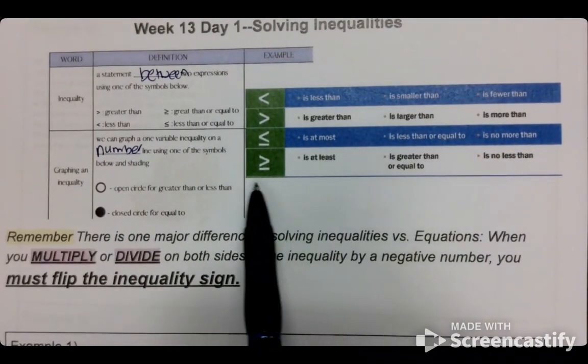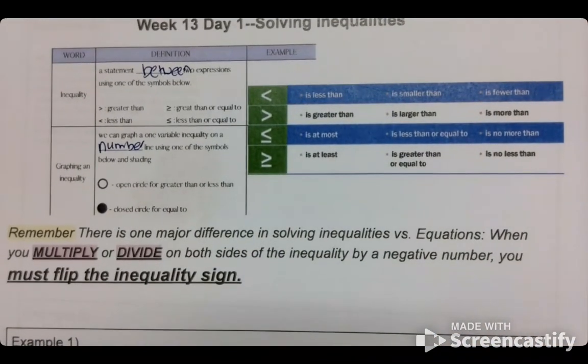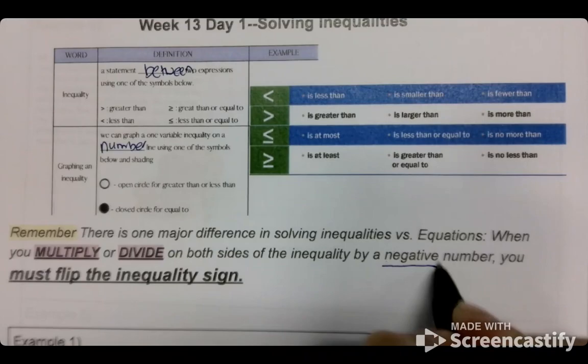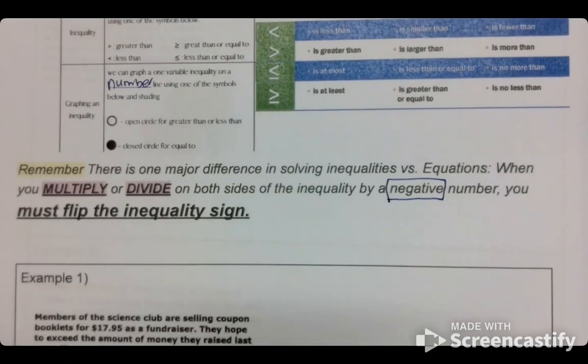We're going to work mostly with word problems, which is why you have some key points here to help you. Again, the biggest thing is when we divide on both sides or multiply on both sides by a negative number, you must flip the inequality sign.